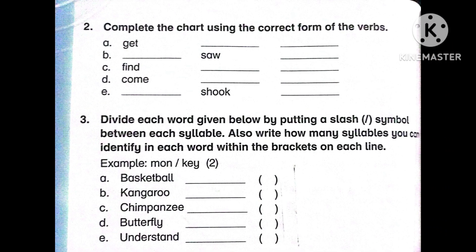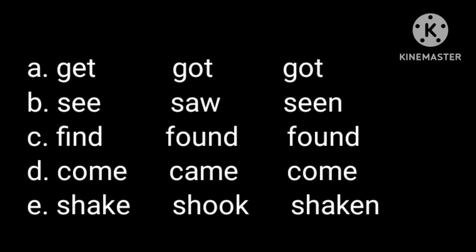The next question is question number two: Complete the chart using the correct form of the verbs. Five words are given. A. Get, got, got. B. See, saw, seen. C. Find, found, found. D. Come, came, come. E. Shake, shook, shaken.